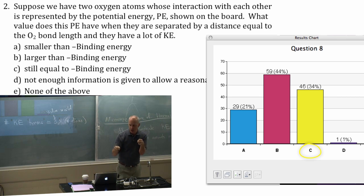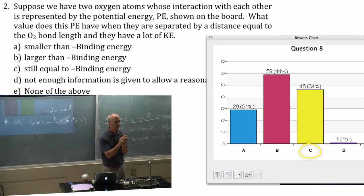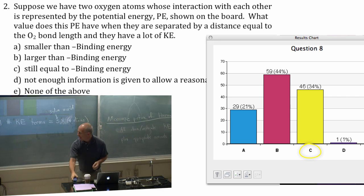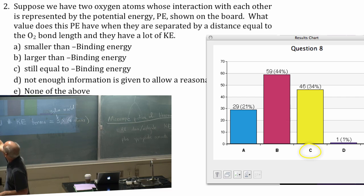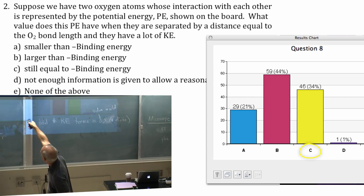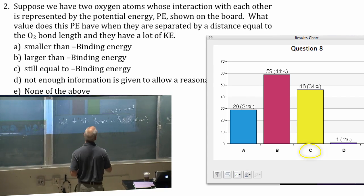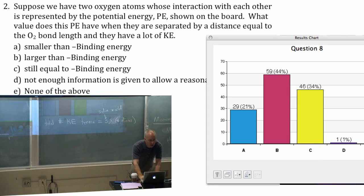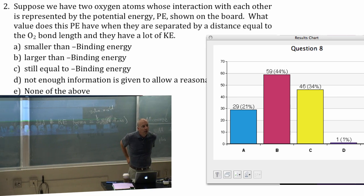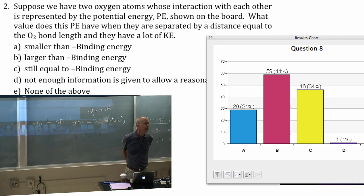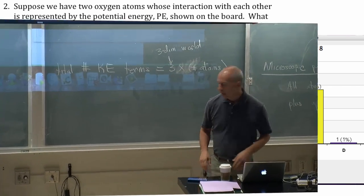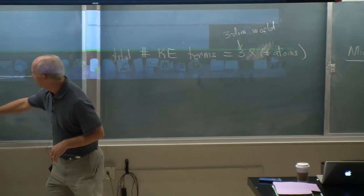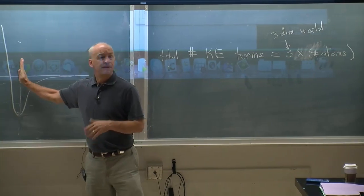The positions on both of these problems were the same so your answer should have been the same, whatever your answer turned out to be. I was looking for the negative of the binding energy — in other words I was looking for C in this one. Still the same potential energy. Potential energy just depends on the locations; it doesn't depend on the kinetic energy at all. You can have any kinetic energy for two atoms that are this far apart.